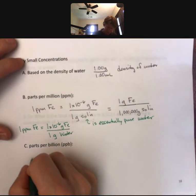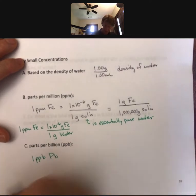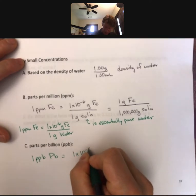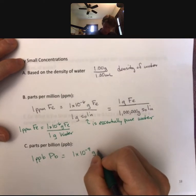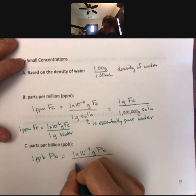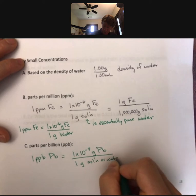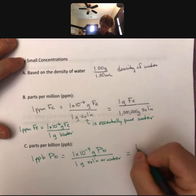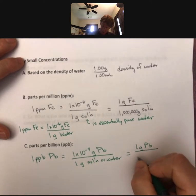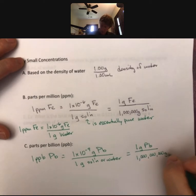Parts per billion: one part per billion of lead, Pb, equals 1 × 10⁻⁹ grams of Pb over 1 gram of solution or water. Putting the factor of 10⁹ on the bottom, we can also write it as 1 gram Pb over 10⁹ grams of water.